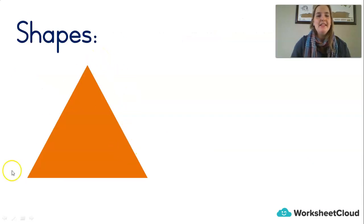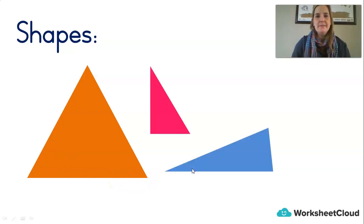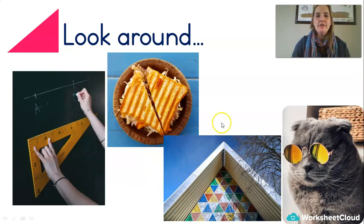What shape is this? It's a flat 2D shape. It has three sides and three corners. It's a triangle. Triangle. That's right. Remember we said tri means three. Triangle. Three angles. One, two, three corners.